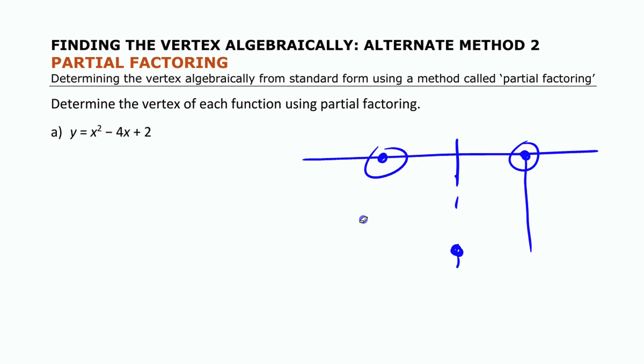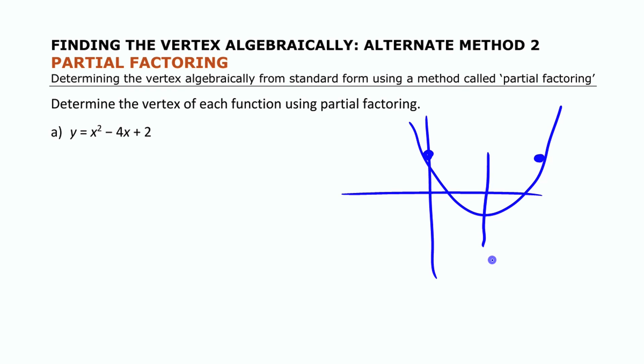Now, you might as well make it as simple as possible for yourself when you're doing that, because from standard form, it's pretty easy to find the y-intercept. So if you know your y-intercept is 2, you're going to use this partial factoring idea to find the other point that's on the other side, and then you can use that to find that middle point there.